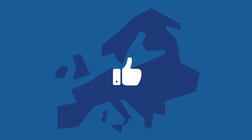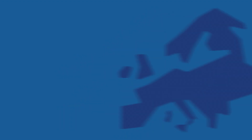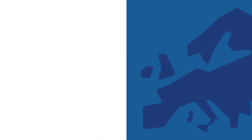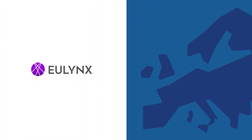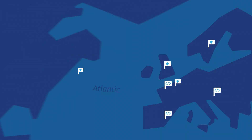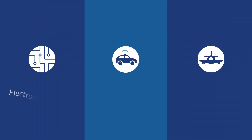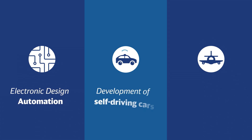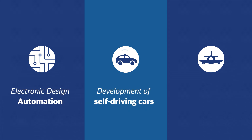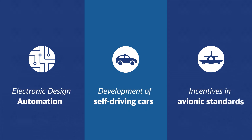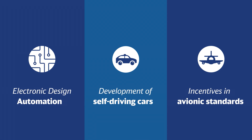Looking at European projects, formal methods have been applied successfully in U-Lynx. With all the benefits they possess, formal methods have been successfully used not just in railways, but also in other industries, including electronic design automation, development of self-driving cars, and incentives in avionic standards.